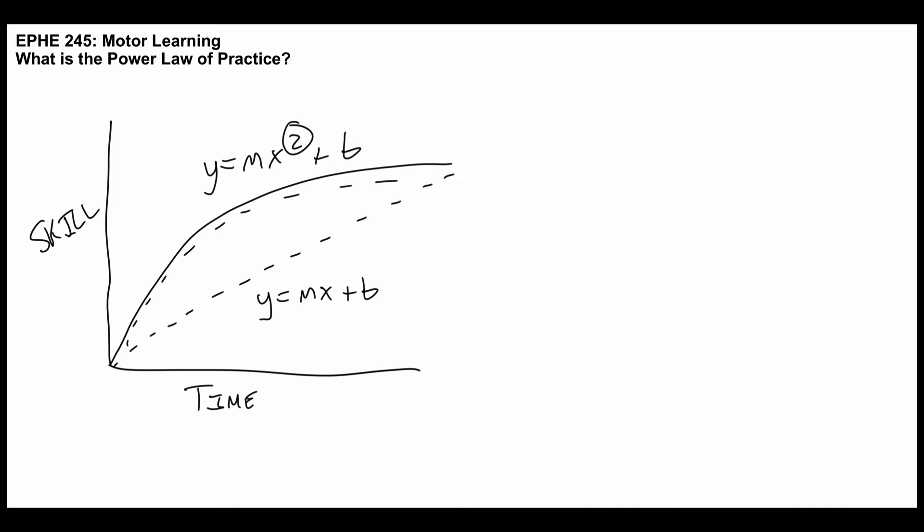You also see this in a situation where your performance measure, for instance imagine error, is what you're actually looking at. You would expect early in learning people to make a lot of errors, and as learning progresses you would expect them to make fewer and fewer errors, and again this is a power function. So this again is the power law of practice.